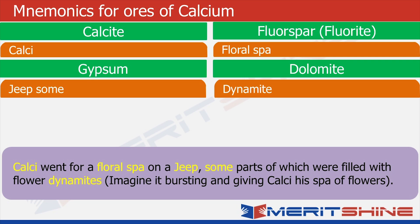Close your eyes and imagine the situation. A large calculator wants to have a spa. He cannot have a water spa, so he wants a special floral spa. For this he has to go on a special jeep, some parts of which are filled with flower dynamites. The flower dynamites will burst open and the subjects will have flowers all over them — that is how one gets a flower spa.